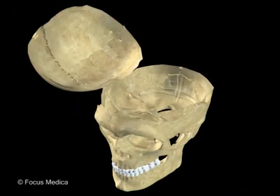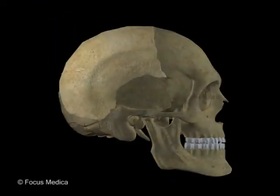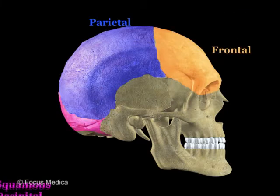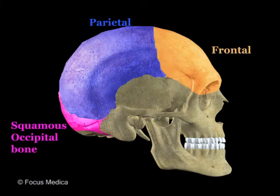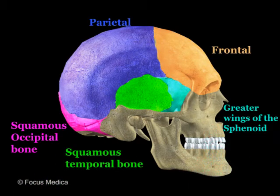The calvarium is the lid of the neurocranium. It comprises the parietal, frontal, and squamous occipital bone, and the upper edges of the squamous temporal and the greater wing of the sphenoid.